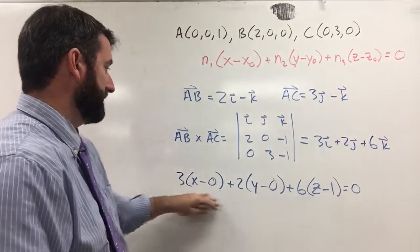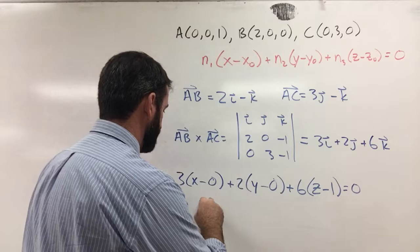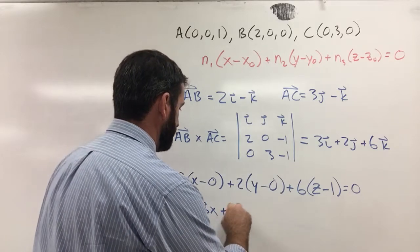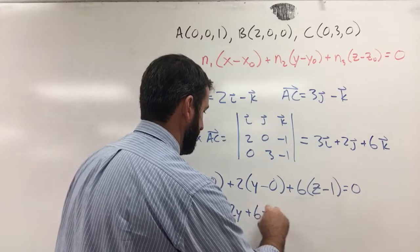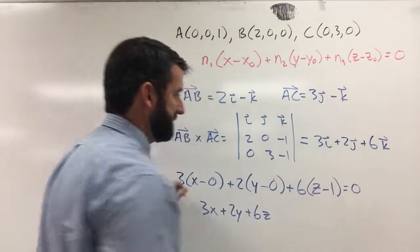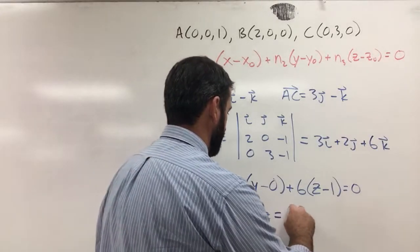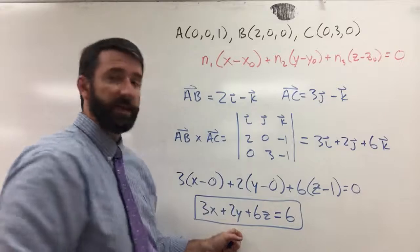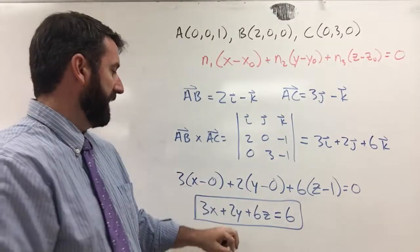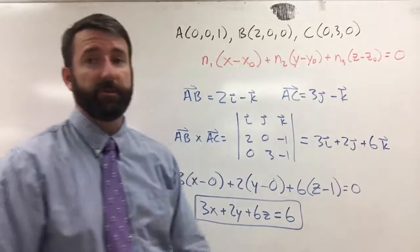And now to clean this up, this x minus 0 is obviously x. So this is 3x plus 2y plus 6z. And then 6 times negative 1 is negative 6. Let's move that to the other side. This is going to be equal to 6. And that's going to be the equation for the plane that contains those three points.